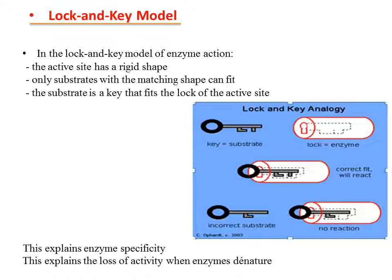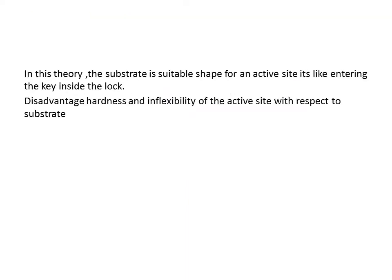The active site has a rigid shape — only the substrate with the matching shape can fit. The substrate is like a key fitting into a lock, where the active site is the lock. This is the Lock and Key model: the substrate has a suitable shape for the active site, like a key entering a lock. A disadvantage of this model is the hardness and inflexibility of the active site with respect to the substrate.